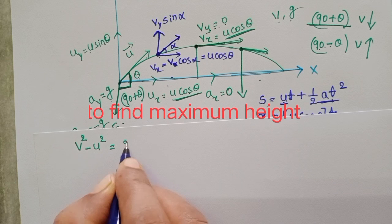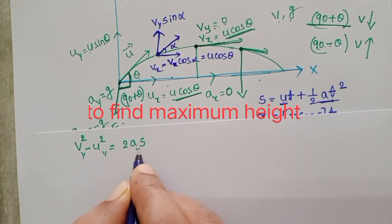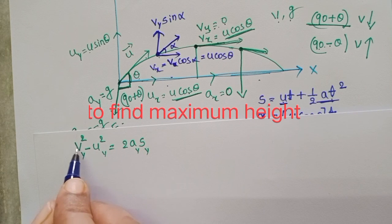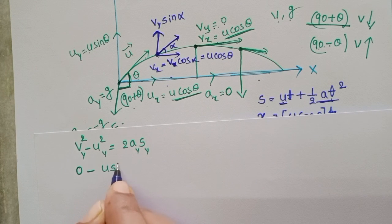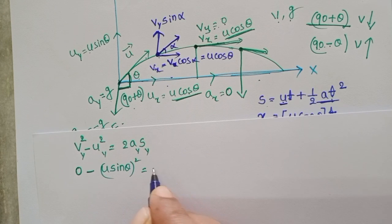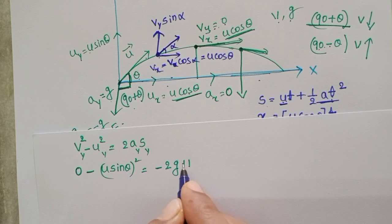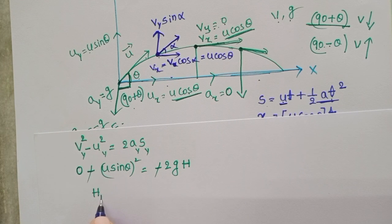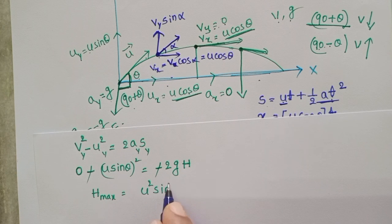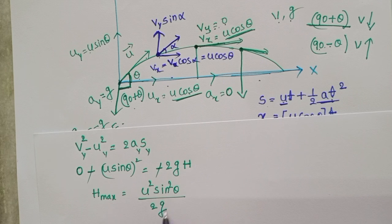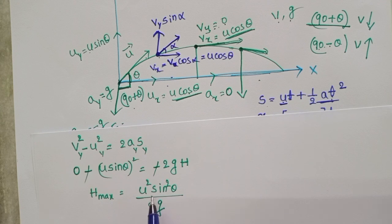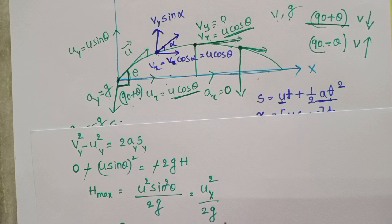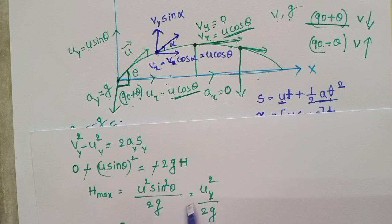Using v² − u² = 2as for the vertical component: at maximum height, final vertical velocity = 0, initial vertical velocity = u sin theta. So: 0 − (u sin theta)² = −2g·H. Thus, maximum height H = u² sin² theta / (2g). In one-dimensional motion the formula is u²/2g, but in oblique projectile motion it is u² sin² theta / (2g).